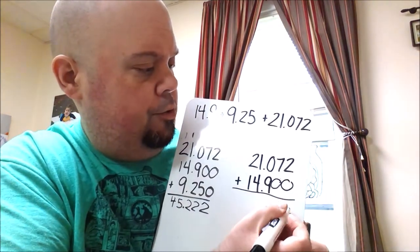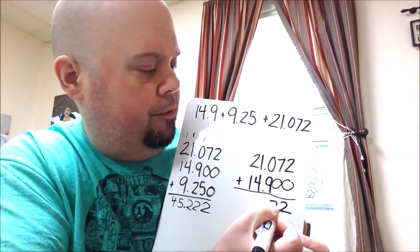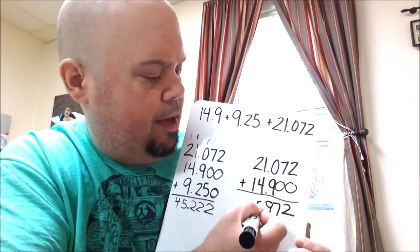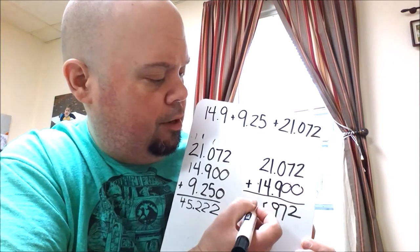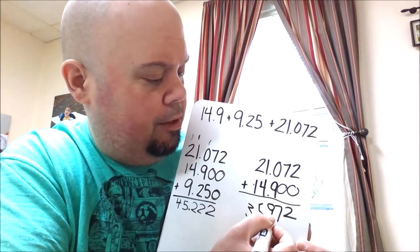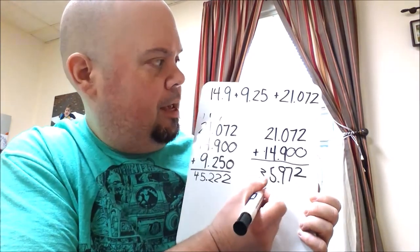So 2 plus 0 is 2. 7 plus 0 is 7. 0 plus 9 is 9. 1 plus 4 is 5. And 2 plus 1 is 3. We put our decimal in line with the others. And now I've still got one more number to add.